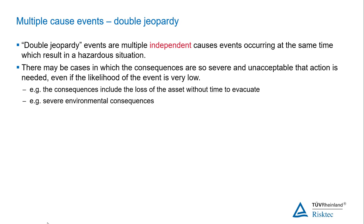The normal approach to a HAZOP is to consider only single failure events. However, in some cases it may be necessary to consider multiple failure cases. So-called double jeopardy events are multiple, independent events which occur at the same time, and these events conspire to cause a hazardous situation. Double jeopardy events are not common, but they do occur, and even where the likelihood is very small, the consequences may be of such catastrophic proportions that provision has to be made to provide safeguards against them.